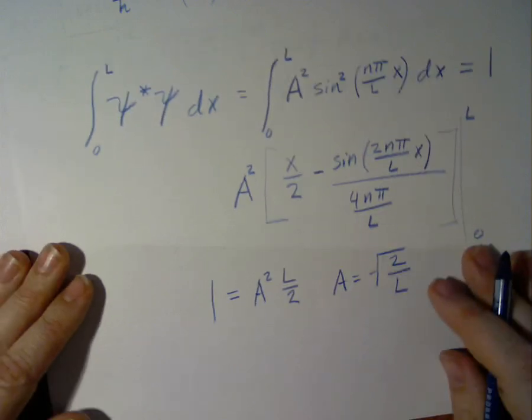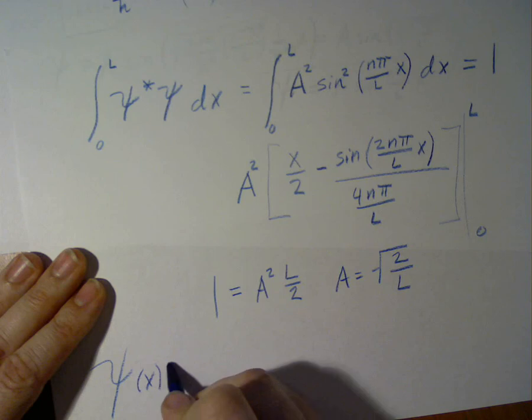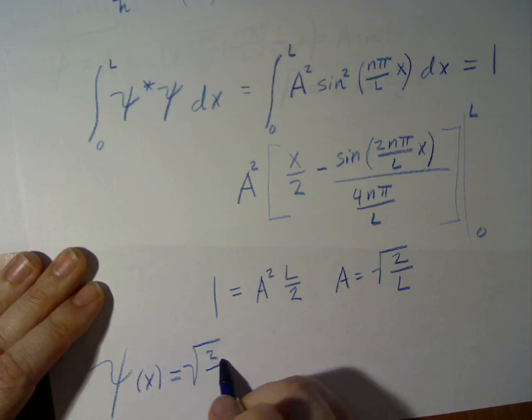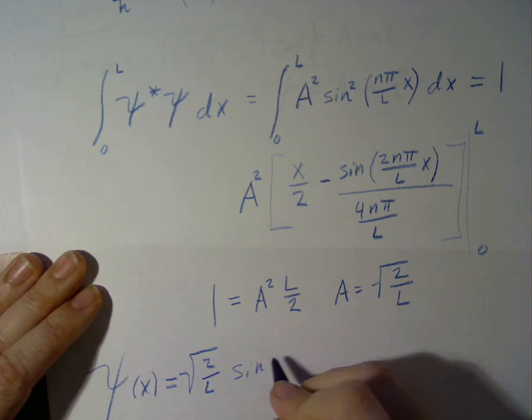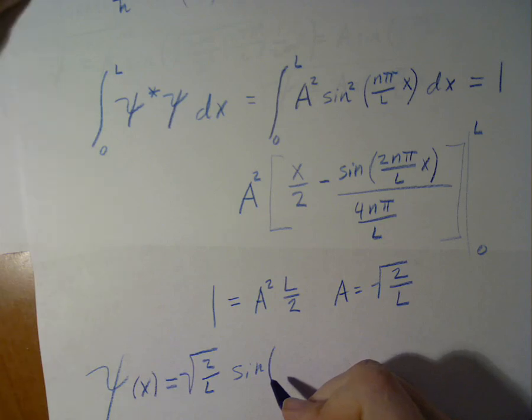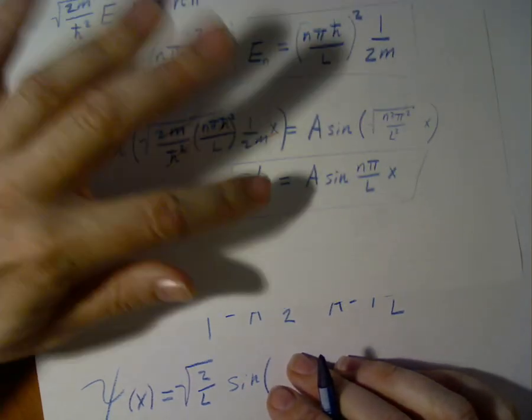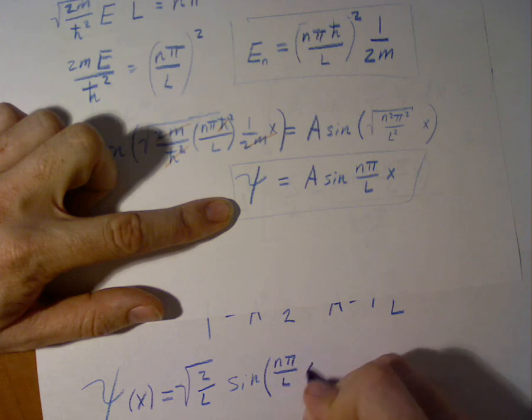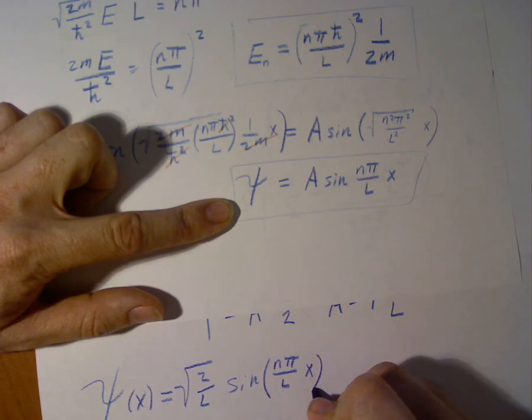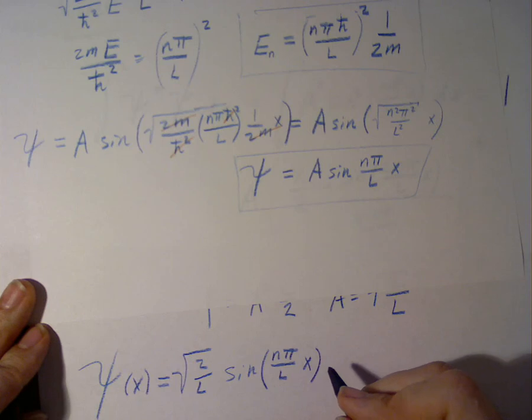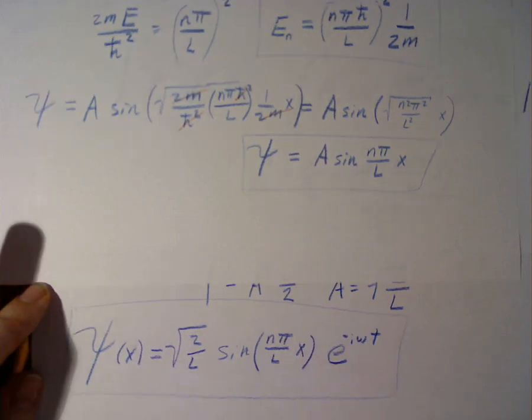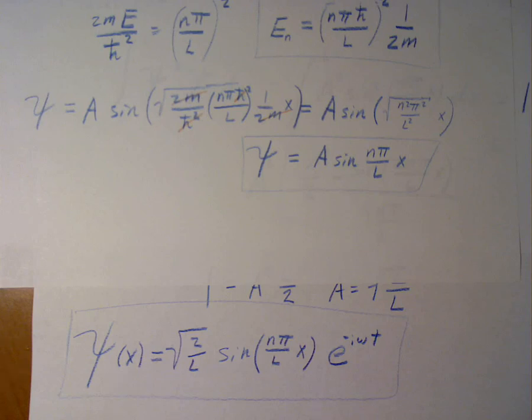This means that our final wave function is square root 2 over L sine of n pi over L times x, and there's our wave function. If you wish to re-include the time dependent portion, we can simply write e to the i omega t. That is the solution for the particle in a box with infinite potential well.